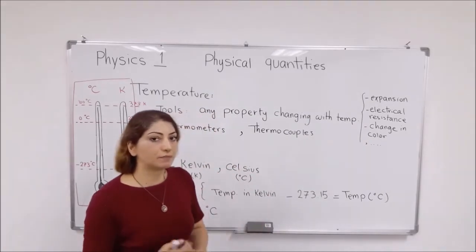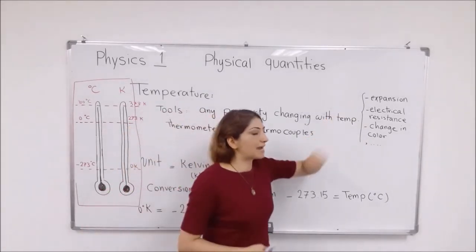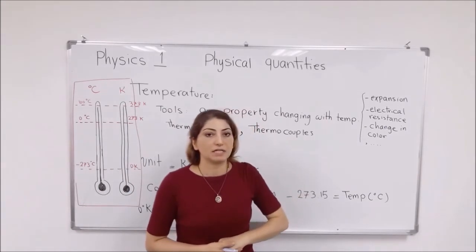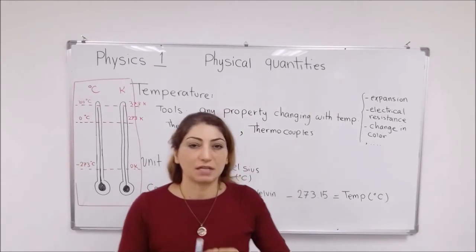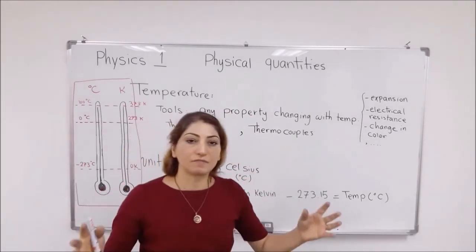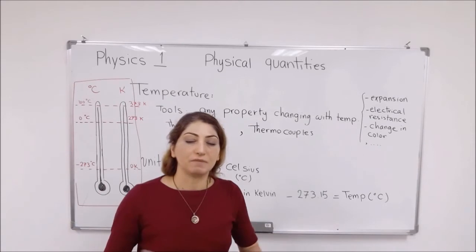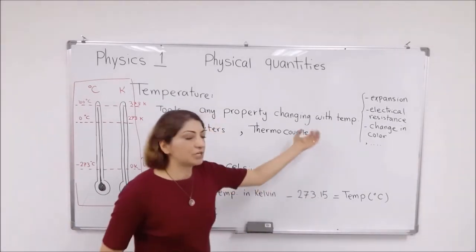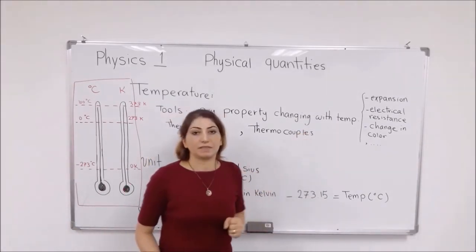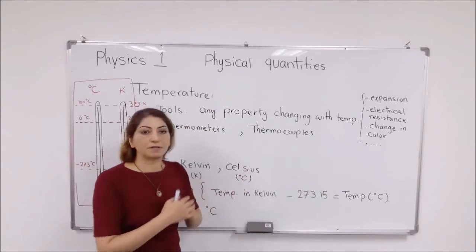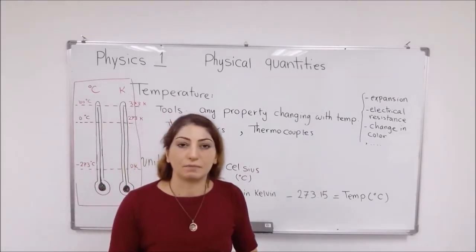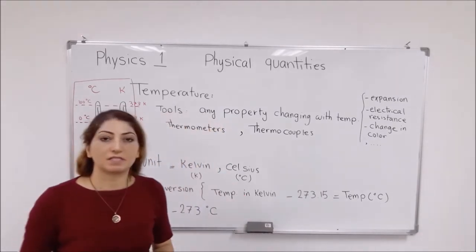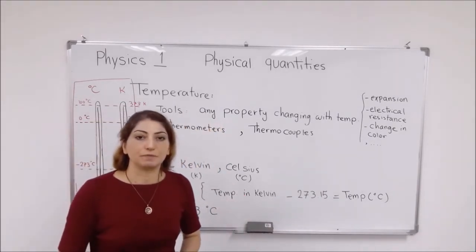For example, those properties of matter that can change with temperature are expansion in solid, liquid, and gas, or electrical resistance in which the resistance of the wire or the length of the wire can change with temperature, or it can be change in color and many other things. They use these properties of matter to make thermometers or any devices that we can measure temperature with.